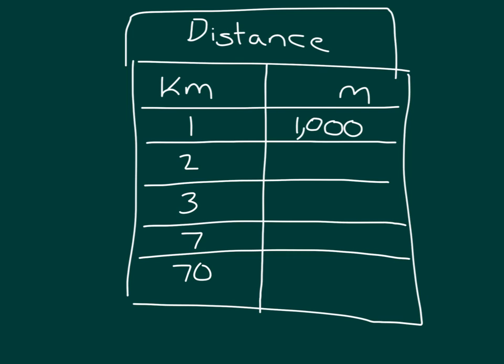What we know is that 1 kilometer equals 1,000 meters. These are kilometers, and these are meters, and this is where we're measuring distance. If we know that 1 kilometer is equal to 1,000 meters, then what does 2 kilometers equal? How many meters is it?